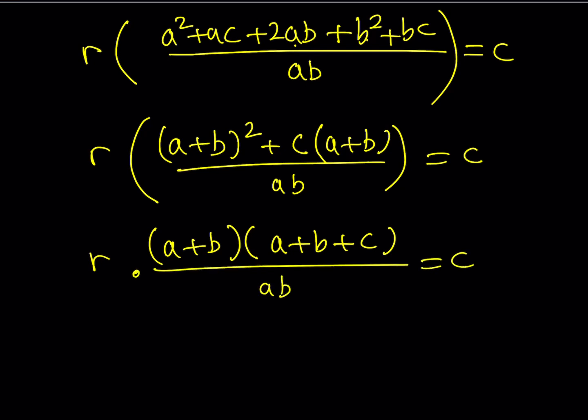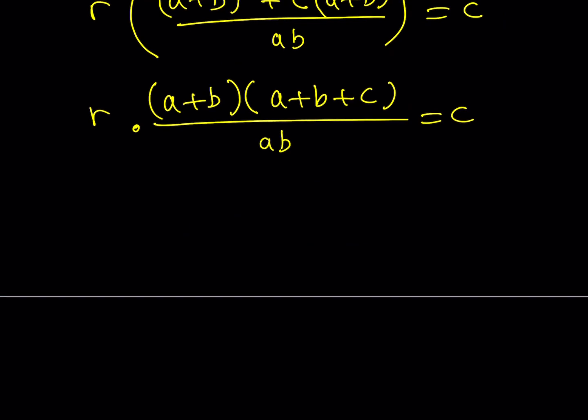Now, I think it's time to cross multiply. Let's go ahead and do it and isolate R. So R is going to be equal to ABC divided by the quantity A plus B plus C. And that brings us to the end of this video.